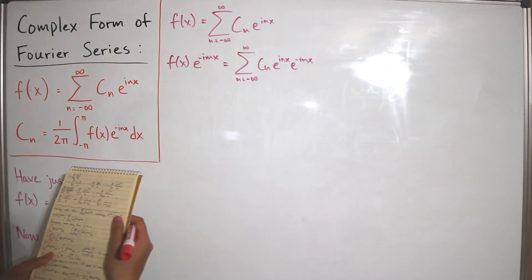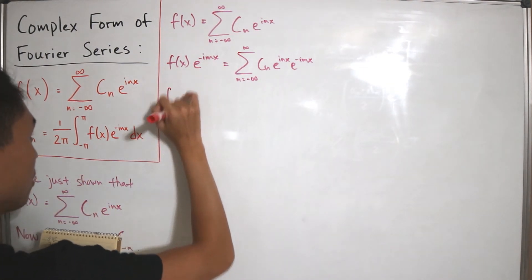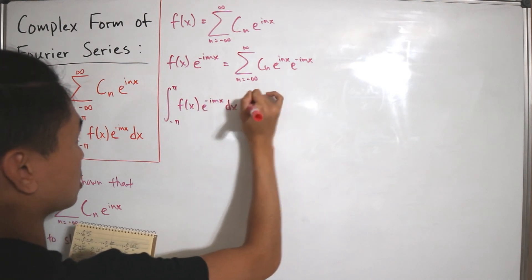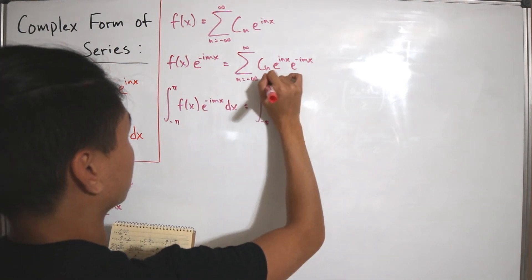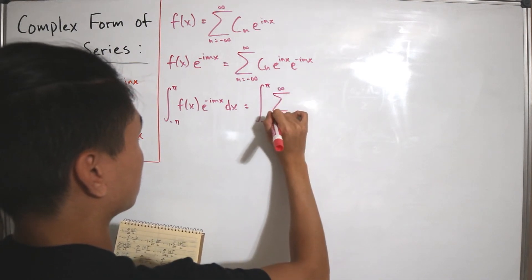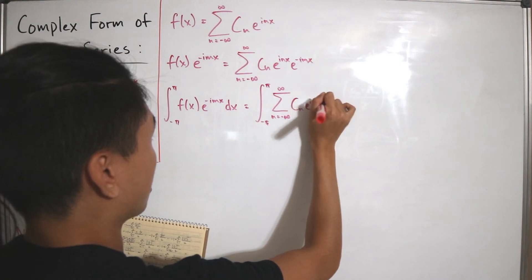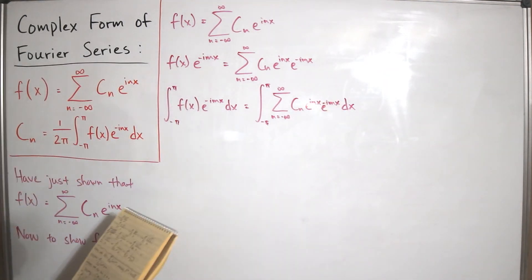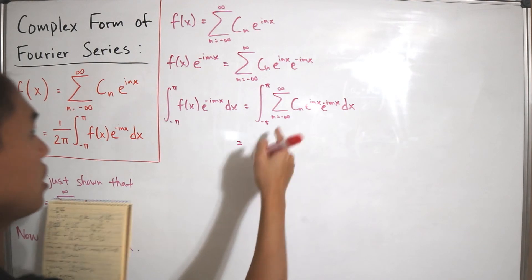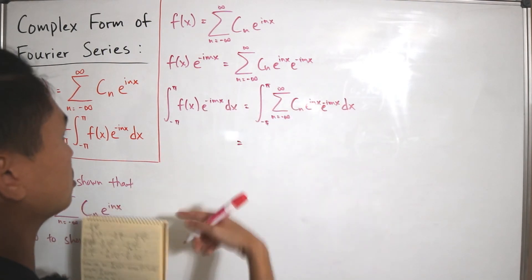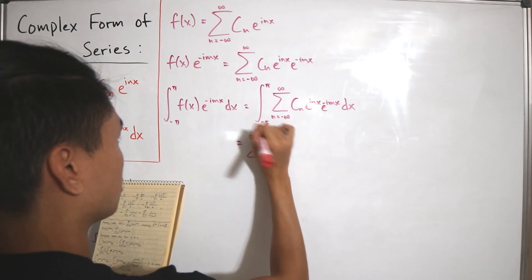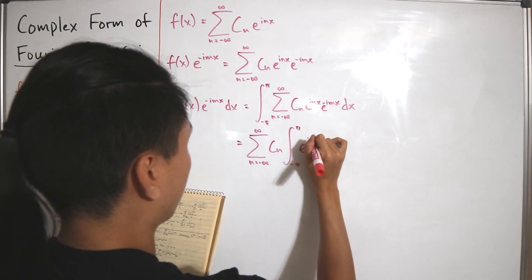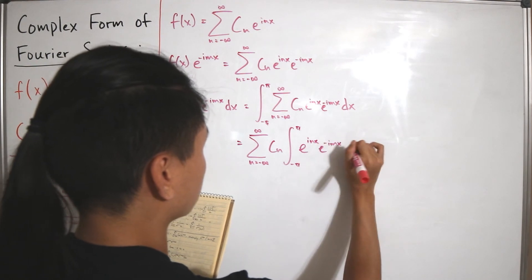Next, we integrate both sides from negative π to positive π. The left side is the integral from negative π to π of f(x) times e to the negative i times m times x dx. On the right side, since c sub n is a constant not depending on x, we interchange the sum and integral to get: the sum from negative infinity to infinity of c sub n times the integral from negative π to π of e to the i times n times x times e to the negative i times m times x dx.